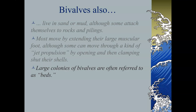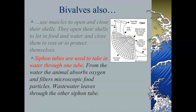Now I'd like you to go back to that diagram. Pause the video and label the siphon tubes, the muscular foot, and the hinge in the diagram of the bivalve on activity sheet 11 part A in your oceans packet. Go ahead and pause the video now, complete that task, and then start the video again when you're ready.